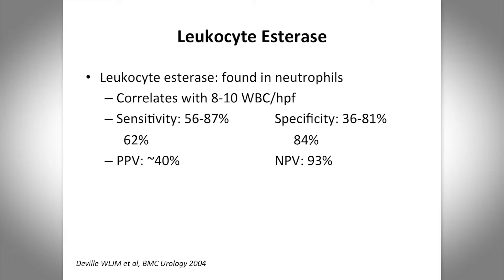The positive predictive value is only about 40 percent. The negative predictive value, however, is much higher at 93 percent. So if you have no leukocyte esterase, that suggests there are no white cells and likely no bacteria in the urine.